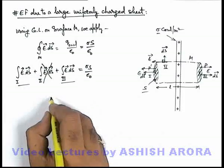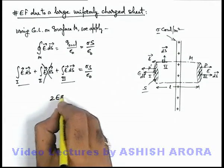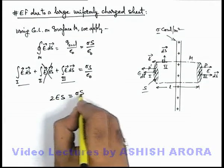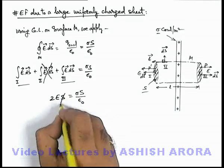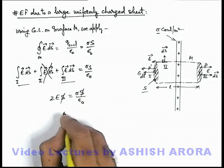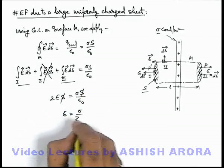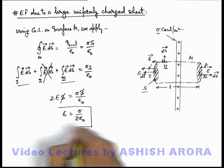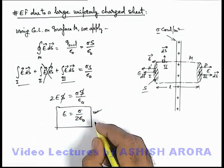So these two will be added as 2ES which will be equal to sigma S by epsilon not, and here S also gets cancelled out and the electric field will be equal to sigma by 2 epsilon not, which is a very important result you always need to keep in mind.